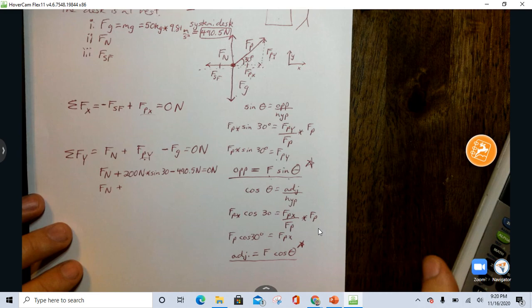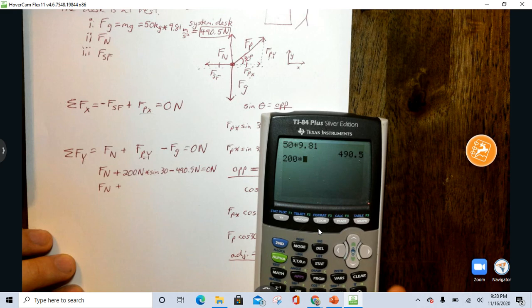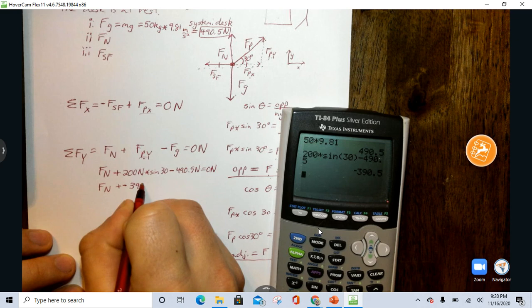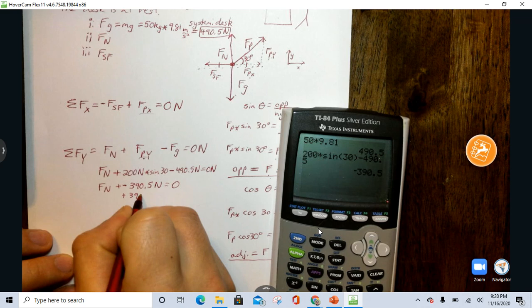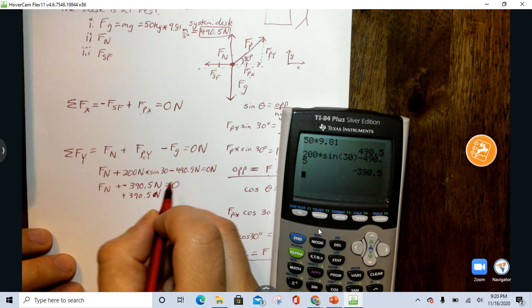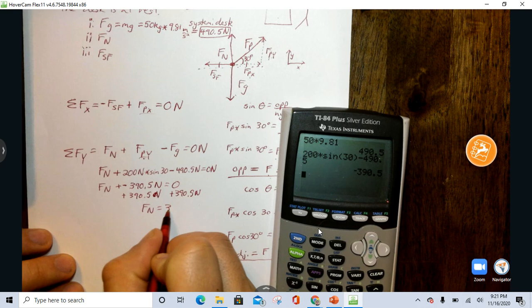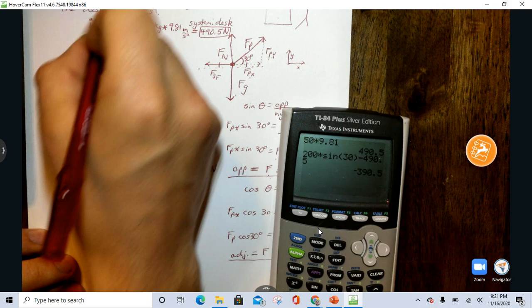We're going to combine terms here. FN equals 200 times sine of 30 minus 490.5. And I get negative 390.5 Newtons equals zero. Add that over to the other side, because I'm trying to solve for normal force. I get normal force is equal to 390.5 Newtons.